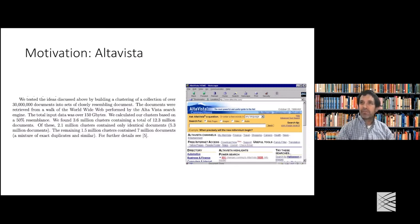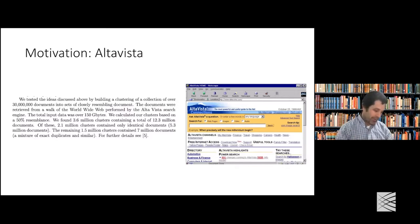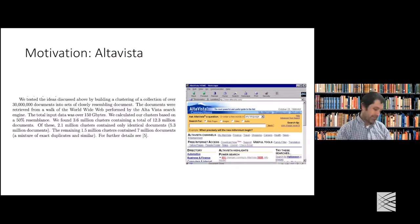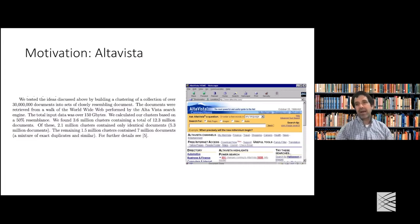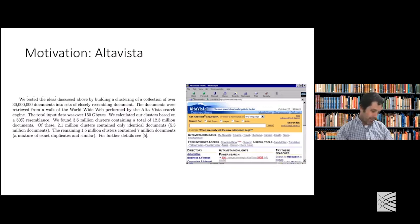AltaVista had exactly this problem: it was trying to collect, categorize, and deal with all the documents it was finding on the World Wide Web. They were looking at a collection of 30 million documents — big for 20 to 25 years ago — with total input data of about 150 gigabytes, which was considered big at the time.